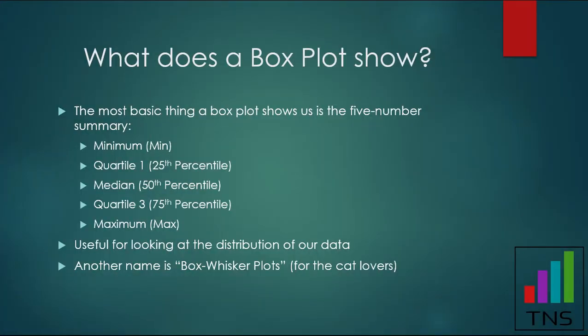In really basic terms, a box plot shows us the five-number summary. That's basically the minimum, the first quartile which is the 25th percentile, the median which is also the 50th percentile of a data distribution, the third quartile which is the 75th percentile, and of course the maximum.